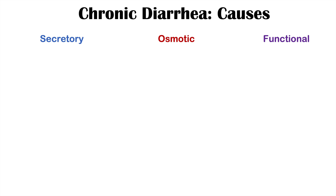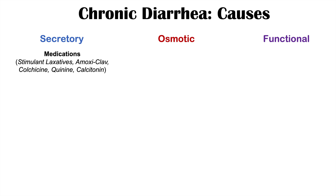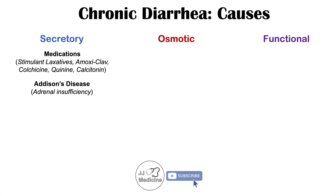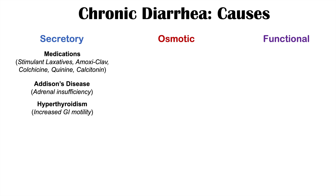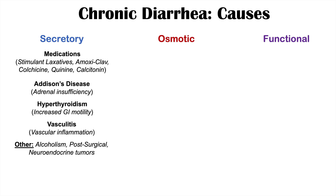Let's talk about specific causes in the secretory, osmotic, and functional categories. Secretory causes include medications such as stimulant laxatives, amoxicillin-clavulanate, colchicine (used for gout), quinine, and calcitonin. Other secretory causes include Addison's disease (adrenal insufficiency), hyperthyroidism — which increases GI motility — vasculitis within the GI system, alcoholism, post-surgical causes, and neuroendocrine tumors.